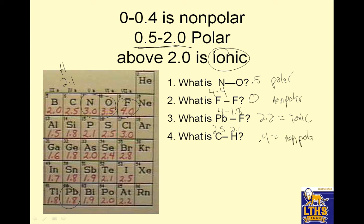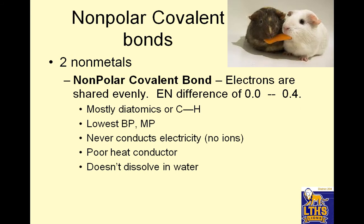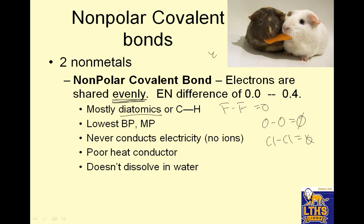Now nonpolar is still covalent. Ionic is different and electrons are transferred. Nonpolar means they're shared evenly. Nonpolar covalent bonds are between two metals — the electrons are shared evenly. Electronegativity difference is 0 to 0.4. They are mostly diatomic elements, meaning you're bonded to yourself. F minus F is going to be 0. O minus O is going to be 0. Cl minus Cl is going to be 0. They're the weakest.